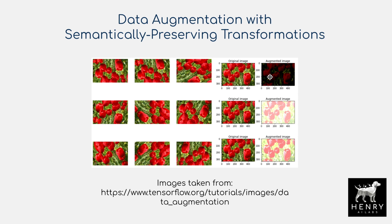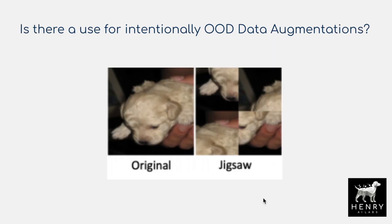The idea of negative data augmentation asks: what about transformations that aren't label-preserving? How can we still use those? Because those still have an interesting prior about what is out of the support of the data distribution. The motivating question behind this research paper is: is there a use for intentionally out-of-distribution data augmentations?